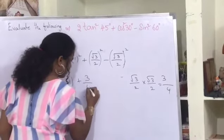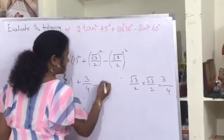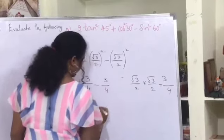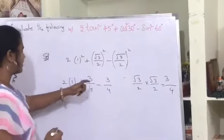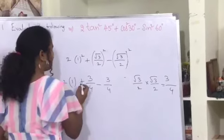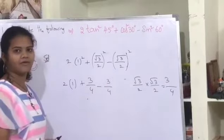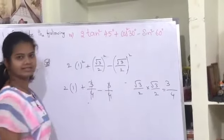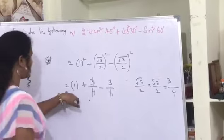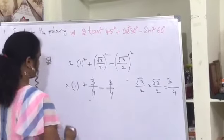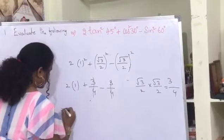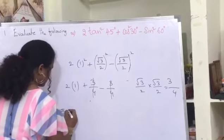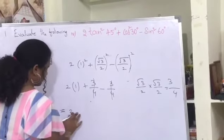Root 3 by 2 whole squared is 3 by 4, and the negative term root 3 by 2 whole squared also gives 3 by 4. Since plus 3 by 4 and minus 3 by 4 cancel each other, we are left with 2 times 1, which gives 2.